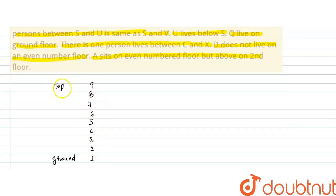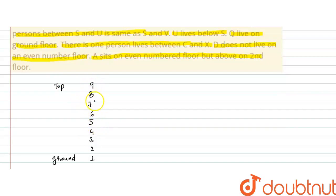The topmost floor is 9. X की position बताई हुई है — 5th floor के ऊपर है और odd number है। 5 से ऊपर जो odd numbers हैं वो 7 या फिर 9 होंगे। तो X की position या तो 7 पे होगी या फिर 9 पे होगी।